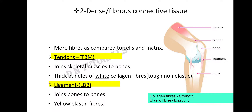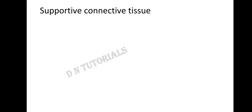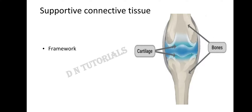Those were the two types of dense or fibrous connective tissue. They are called fibrous because they have more fibers compared to cells and matrix — the two types being tendon and ligament. The next tissue is the supportive connective tissue, which, as the name tells us, gives support to our body. This tissue consists of bones and cartilage and gives a framework to our body.